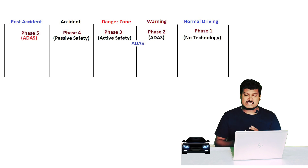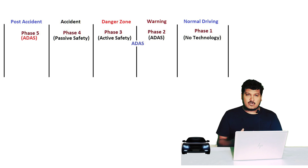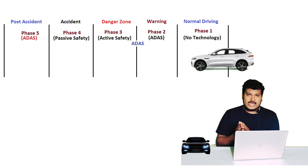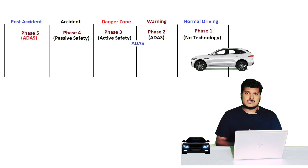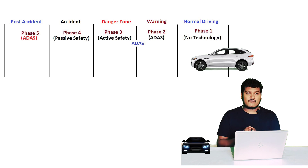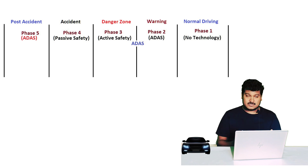The reason you need to understand these five phases is this: in phase one, normal driving, there is no use of any ADAS feature, Active Safety feature, or Passive Safety feature. It's like level zero autonomous — completely manual. You have your accelerator pedal and gear, no autonomous, no automatic gears. So in phase one, there is no dependency on any assistance technology.